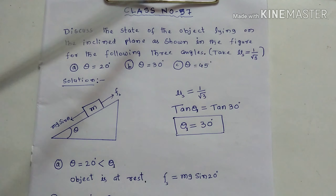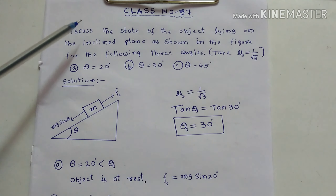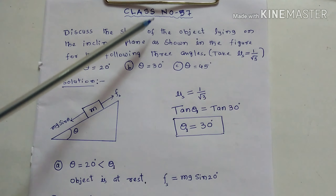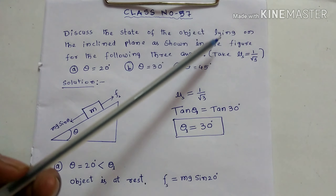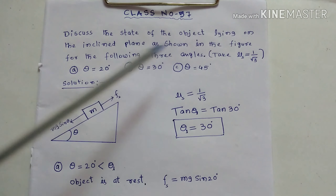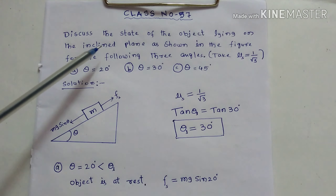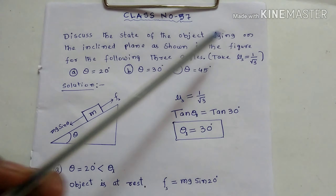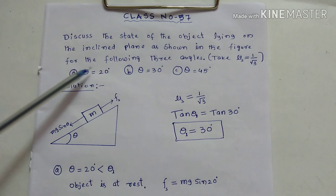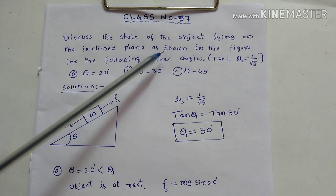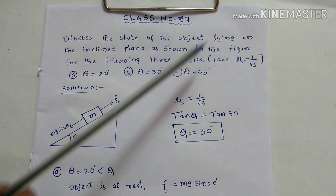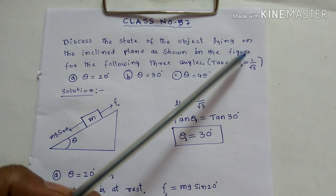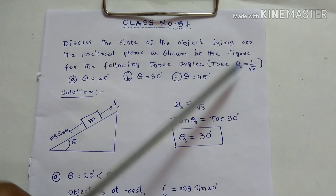This is class number 57. Discuss the state of the object lying on the inclined plane as shown in the figure for the following three angles. Take mu s equal to 1 by root 3.